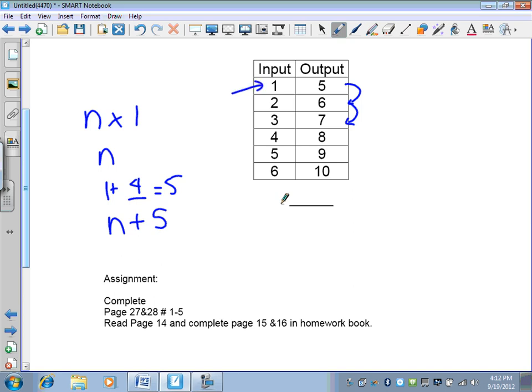So let's go over here and check it out. If n is 1, 1 plus 4 equals 5. Plus 4 equals 6. Plus 4 equals 7. So you can see that I've figured it out correctly. So my relation is n plus 4.